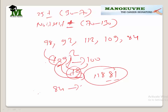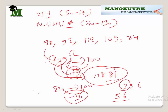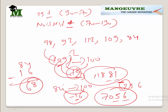What about 84? Compare by 100 — it is 16 less. 16 squared is 256, so write 56 and carry 2. Since it is 16 less, subtract: 84 minus 16 gives 68, plus carry 2 gives 70. So 84 squared is 7056.